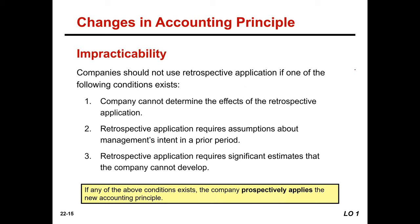Your book also talks about impracticability. If it's impractical to go back and retrospectively adjust, then we do not necessarily have to. Companies should not use retrospective application if: the company cannot determine the effects of the retrospective application; retrospective application requires assumptions about management's intent in a prior period; or retrospective application requires significant estimates the company cannot develop. If any of these conditions exist, the company prospectively applies the new accounting principle — meaning only future periods going forward.